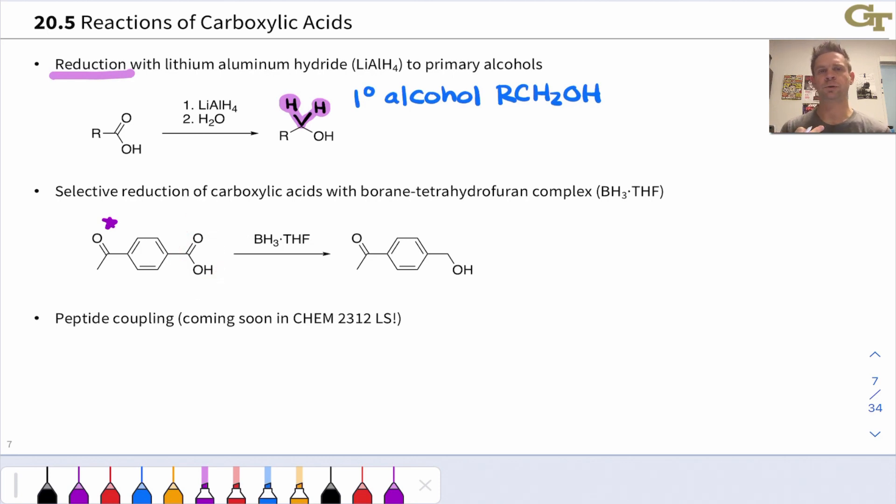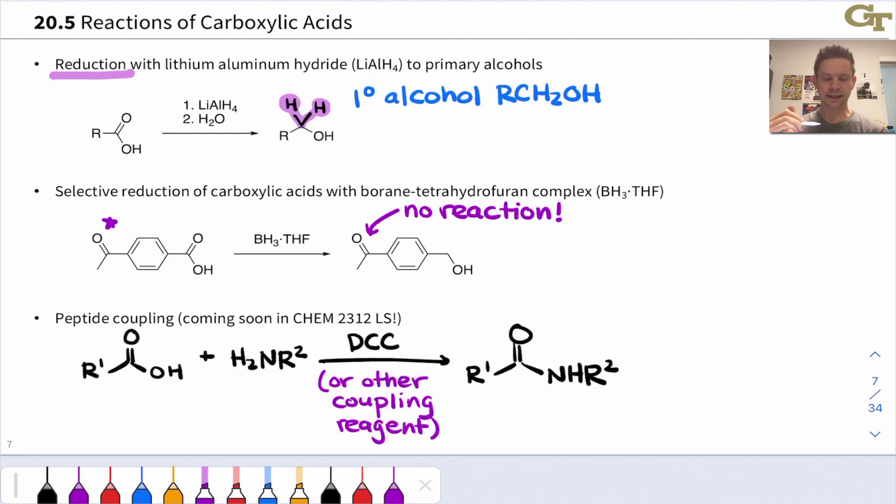And then the third reaction type, which we'll look at in more detail later on in CHEM 2312 LS, is peptide coupling, which converts a carboxylic acid into an amide.